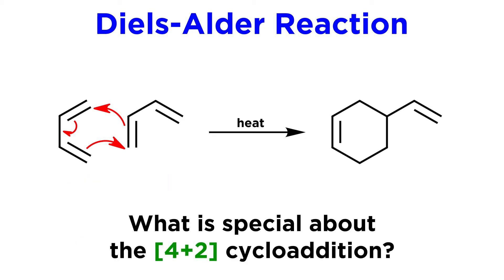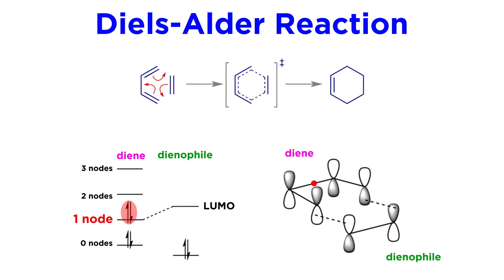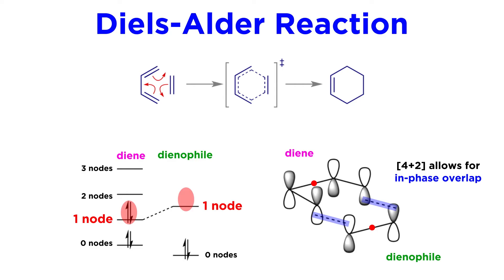So what is it about the 4+2 combination that works where the others don't? Much like many other chemical phenomena, the explanation involves molecular orbitals. In order for the highest occupied molecular orbital (HOMO) of the diene to put electron density into the lowest unoccupied molecular orbital (LUMO) of the dienophile, the relevant overlapping orbitals must be in phase with one another as the reactants approach in vertical fashion. With four pi electrons in the diene, that makes this the HOMO, with one node. It simply happens to be the case that this in-phase overlap is possible with 4+2, while it does not work for the other configurations.